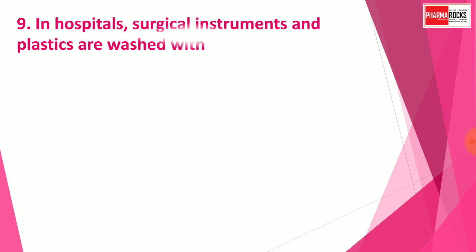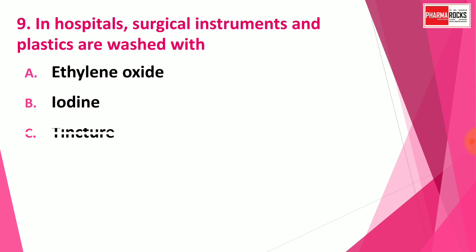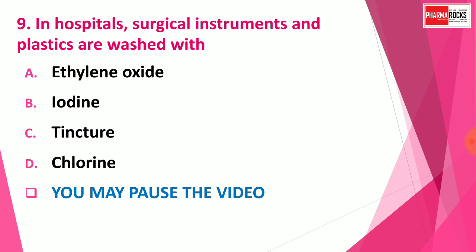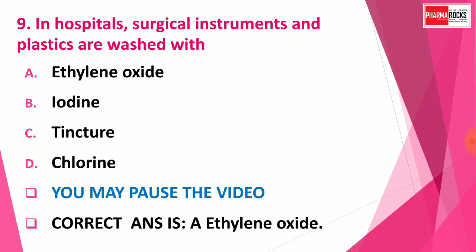Question number 9. In hospital, surgical instruments and plastics are washed with — Option A: Ethylene oxide, Option B: Iodine, Option C: Tincture, and Option D: Chlorine. You may pause the video. The right answer is Option A, ethylene oxide. In the hospital, surgical instruments and plastics are sterilized with ethylene oxide. This is called ethylene oxide sterilization, or also called gaseous sterilization technique.